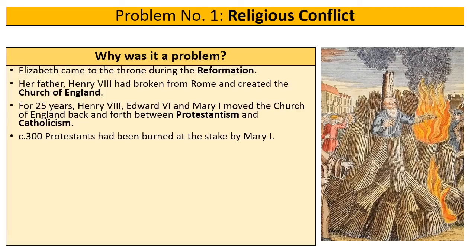This is perhaps most notably seen when 300 Protestants were burnt at the stake by Queen Mary I before Elizabeth came to the throne. We must also realise that Edward in his reign had killed some Catholics as well, so it wasn't just Catholics killing Protestants. Either way, 25 years before Elizabeth comes to the throne there had been this violence, conflict and turmoil.